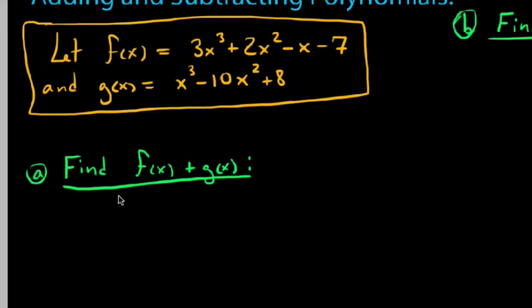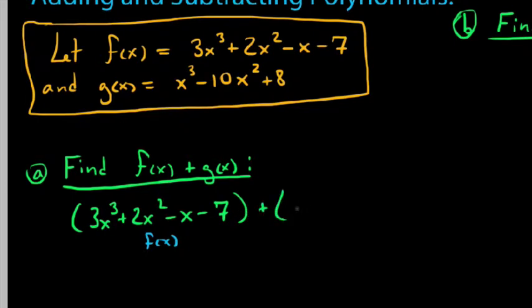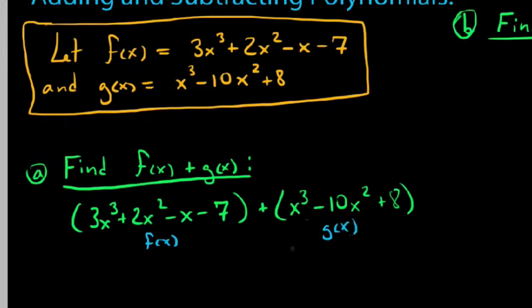The sum of these two functions can be found in two ways, but the first way — the most common way — is horizontally. So when we say horizontally, basically what we're saying is f of x plus g of x, we're going to write this out horizontally. That is, we have f of x, which is 3x cubed plus 2x squared minus x minus 7, plus g of x, which is x cubed minus 10x squared plus 8 in parentheses. Here we have our expression horizontally listed, and we want to add these things together now.